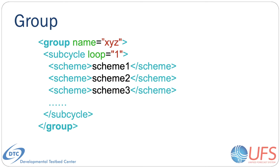When constructing new suites, the groups can be edited to suit the needs of the host application. For example, if a subset of physics schemes needs to be more tightly connected with the dynamics and called more frequently, one could create a group consisting of that subset and place a CCPP run call in the appropriate place in the host application. The remainder of the parameterization groups could be called using CCPP run calls in a different part of the host application code.